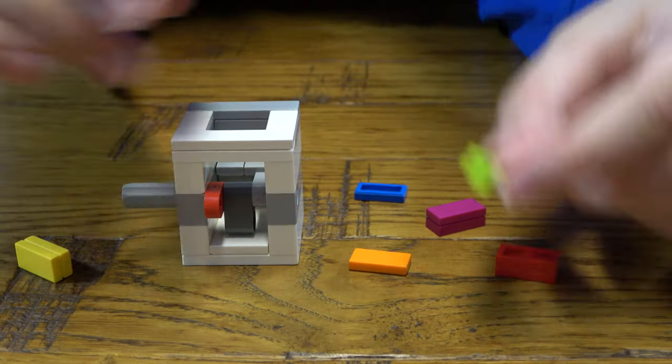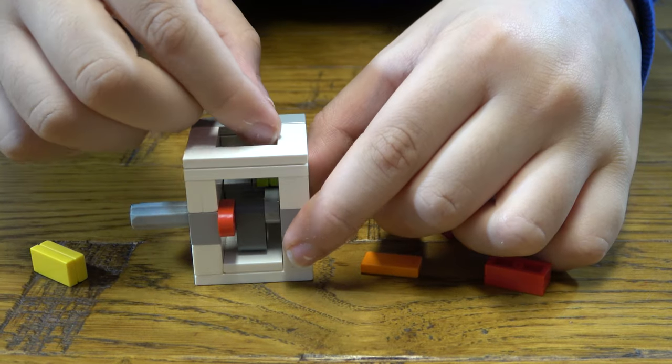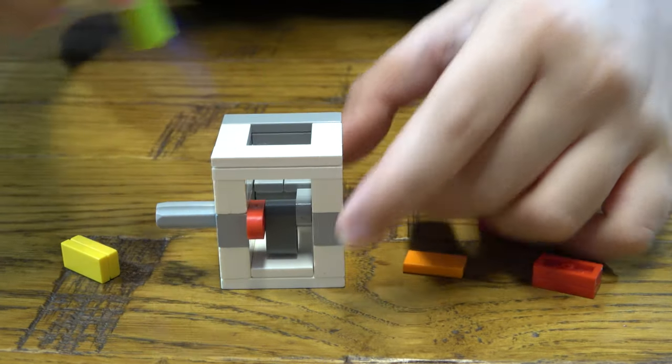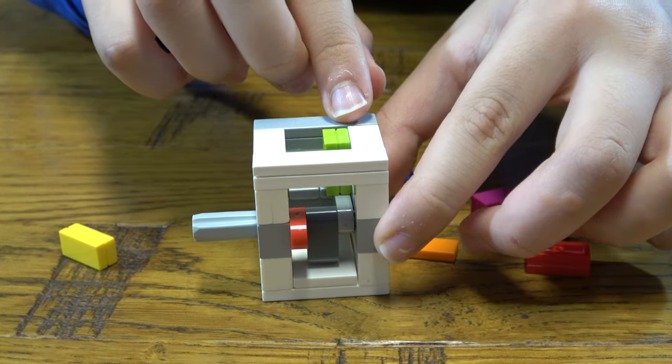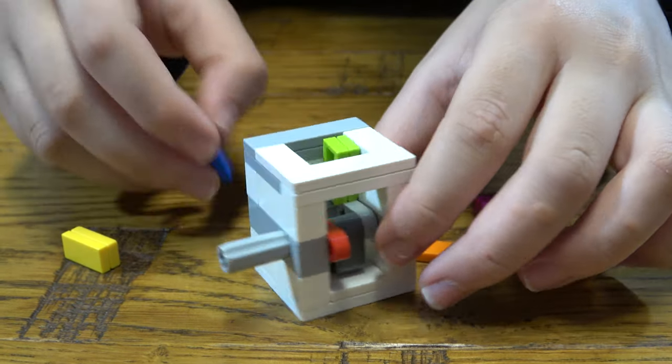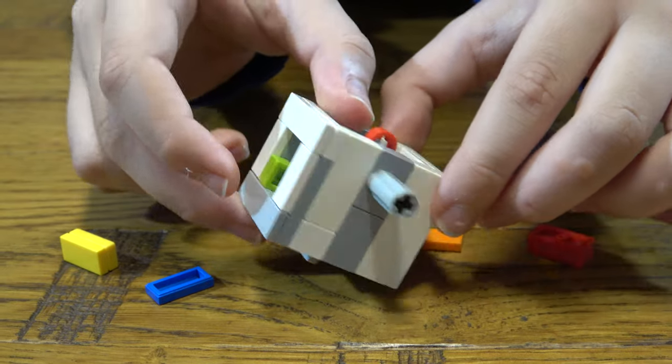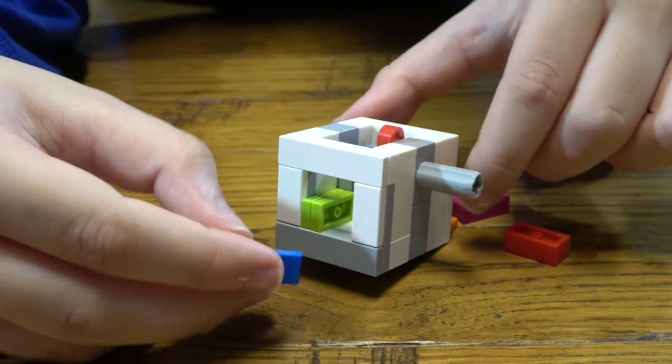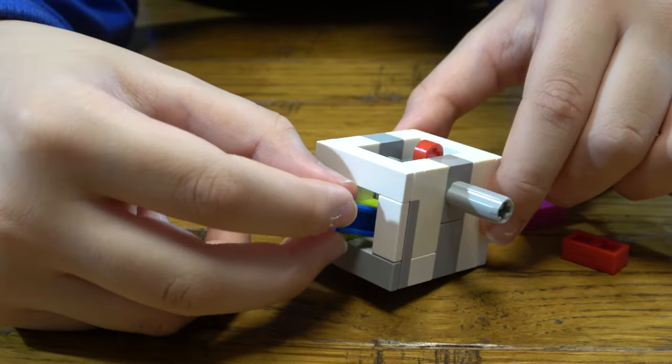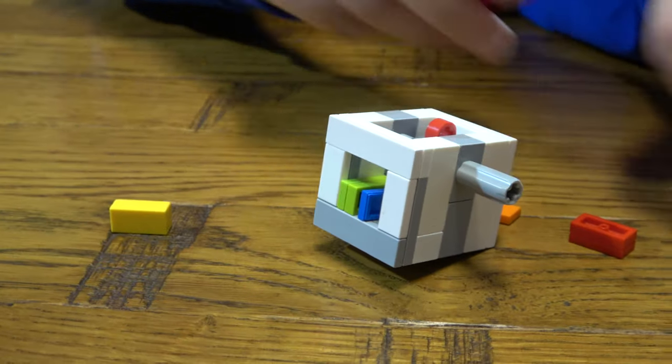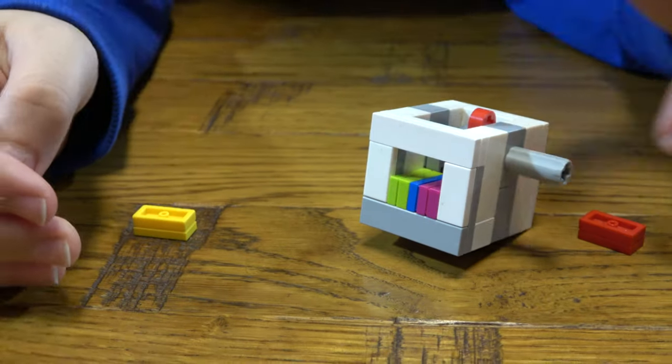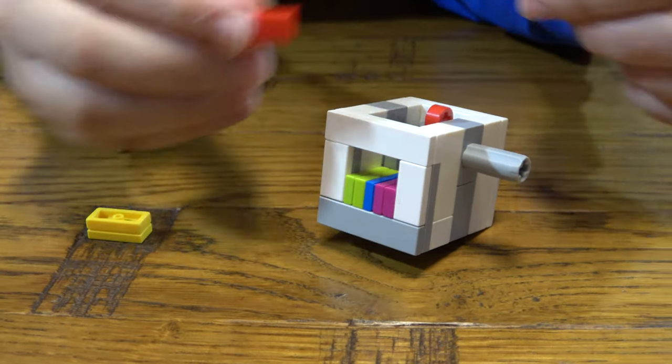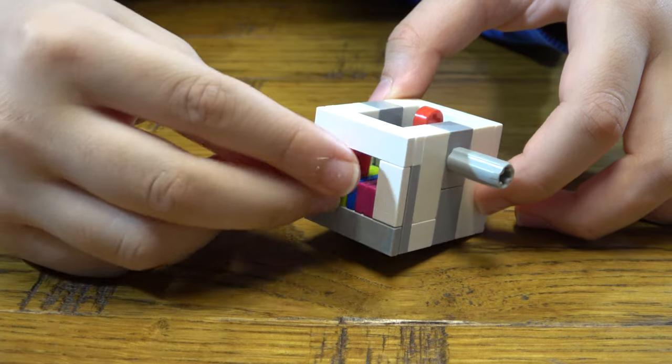So we're going to start off with placing green down here. As you can see, it'll just slightly go off. We need to place it like this, and then we put that over to there. And we just slightly slide that and place that there. Then next we need to place the red here.